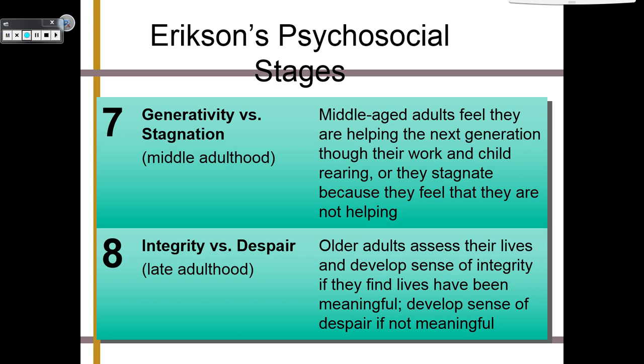The final stage happens in late adulthood — 55, 60, and up — and it's integrity versus despair. During this time, older adults assess their lives and develop a sense of integrity if they find that their lives have been meaningful. If they don't think they've led a meaningful life, they will fall into despair.